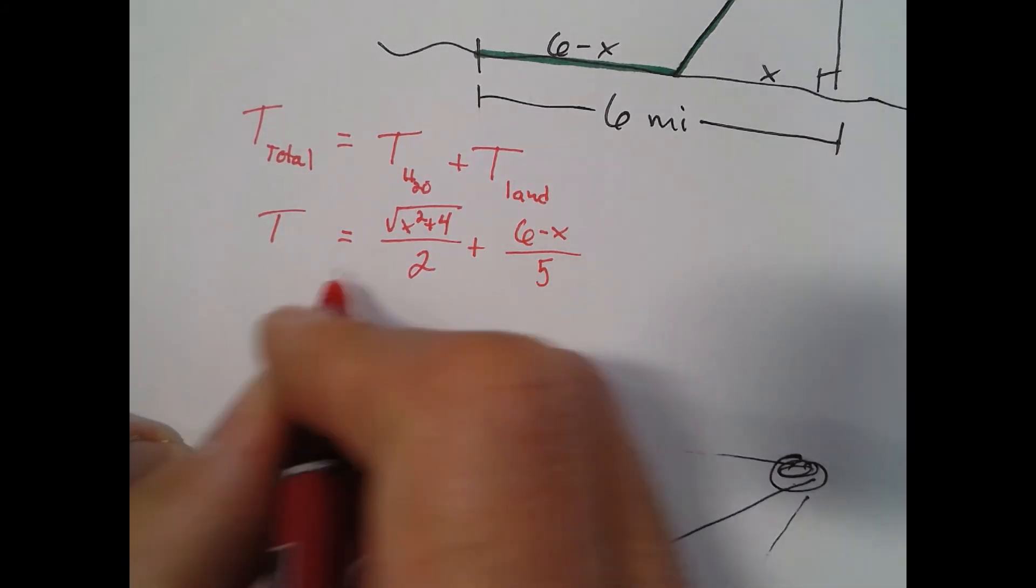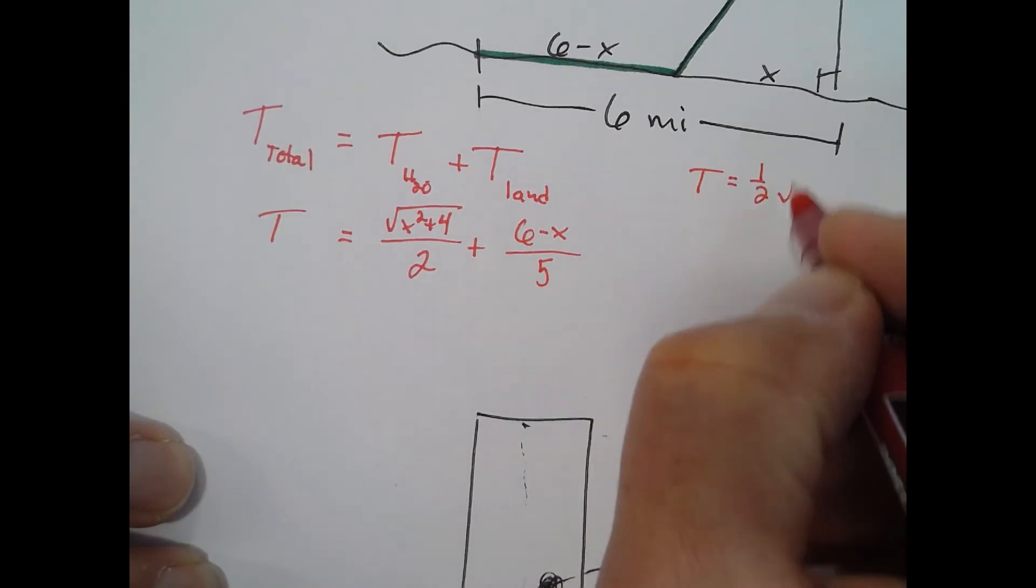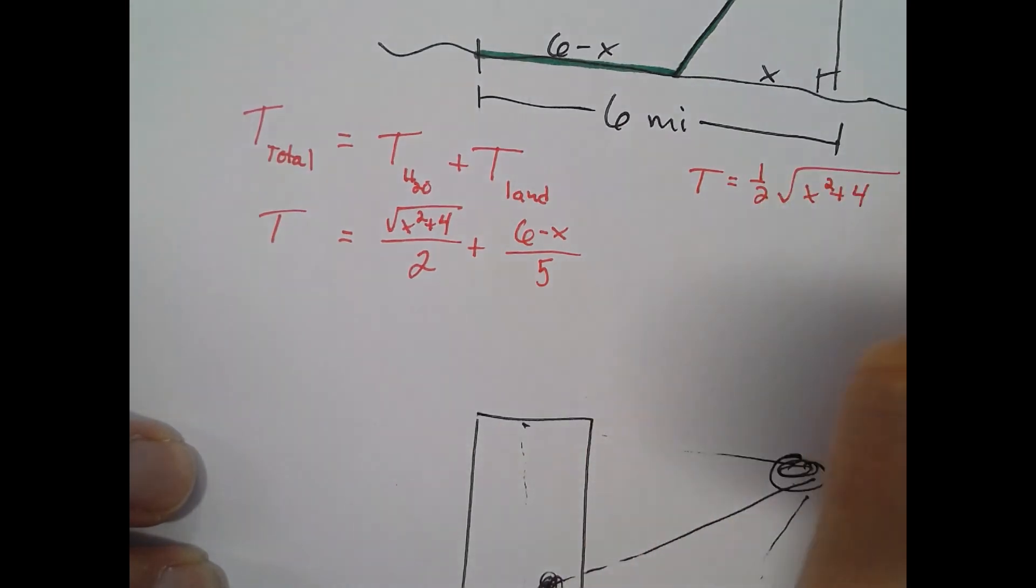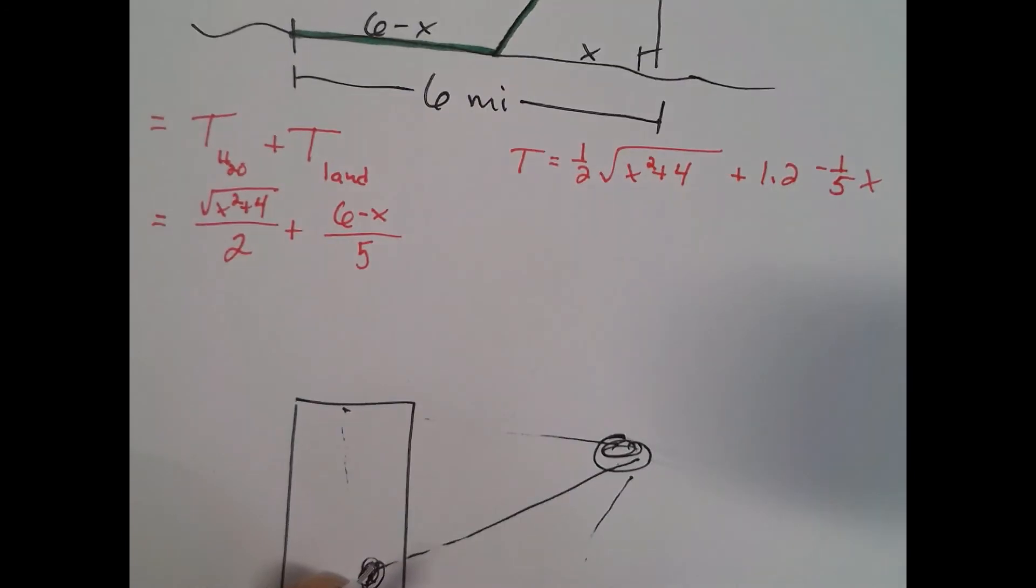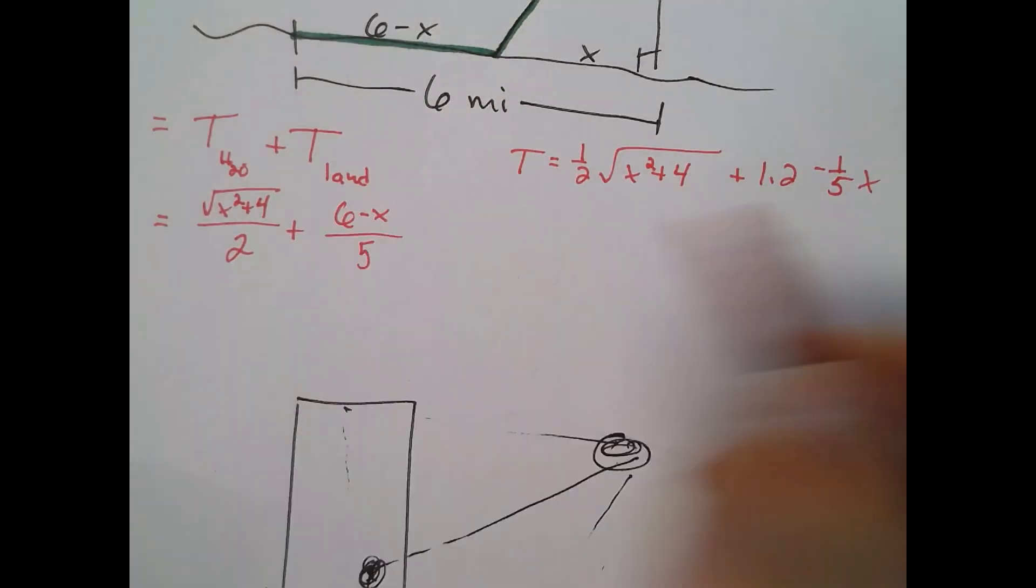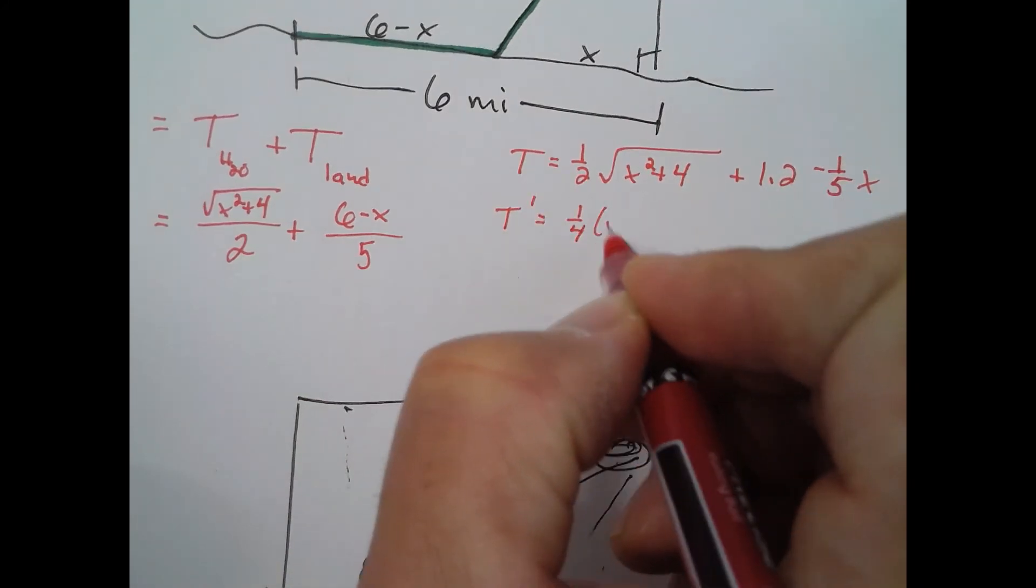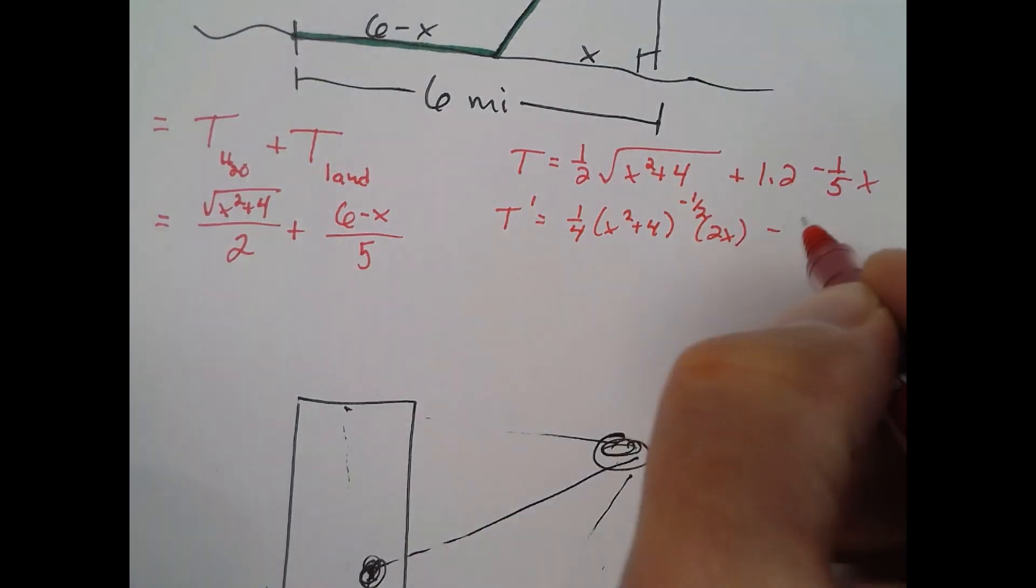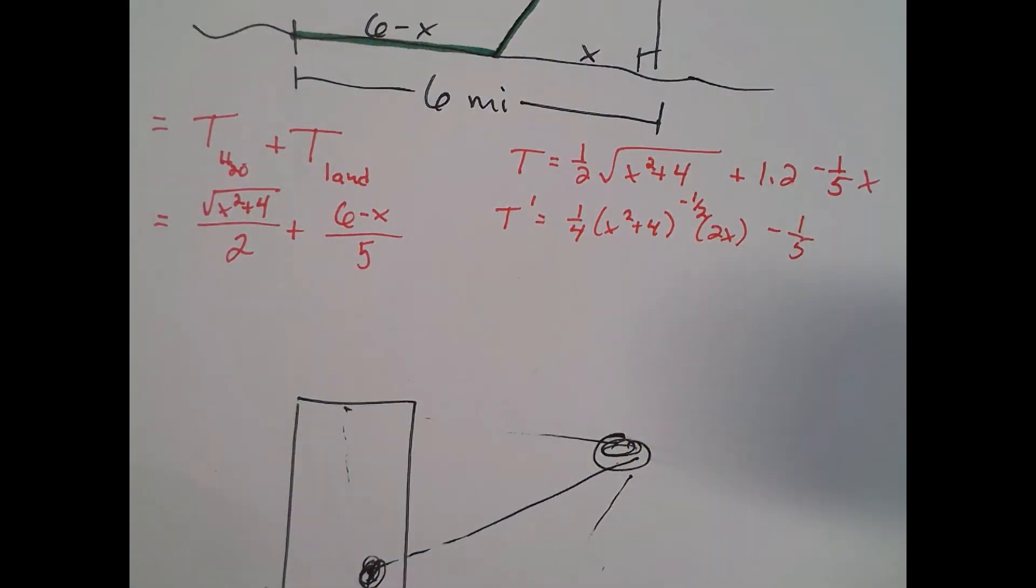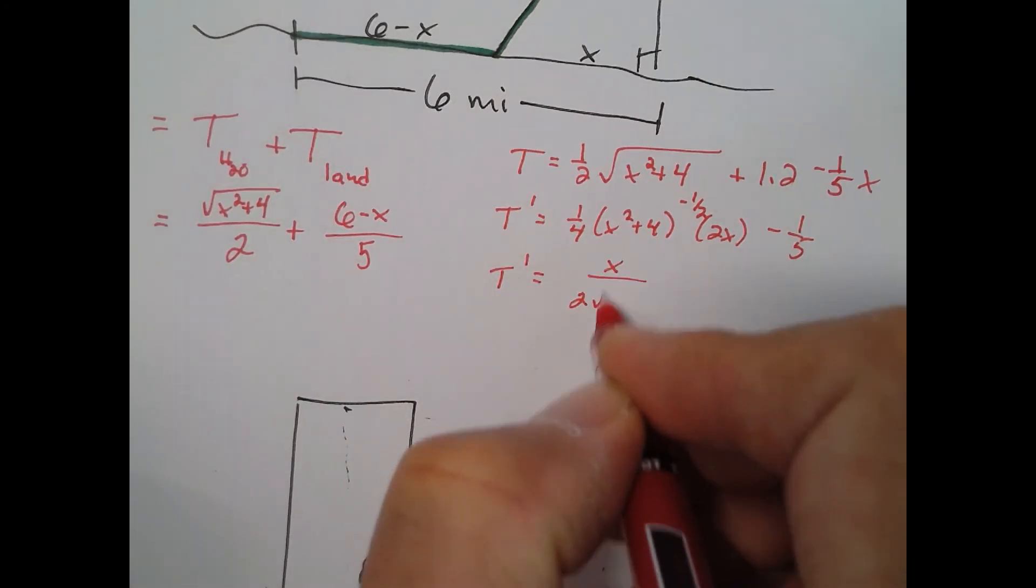I'm going to think of that as—I'll clean that up a bit. So T equals one-half times the square root of x squared plus four plus one point two minus one-fifth x, something like that. Now the derivative: T prime equals one-fourth times x squared plus four to the negative one-half times 2x minus one-fifth. There's our derivative. So T prime is x over two times the square root of x squared plus four minus one-fifth.